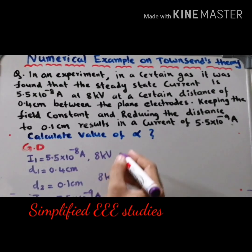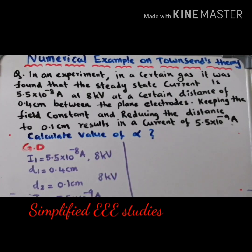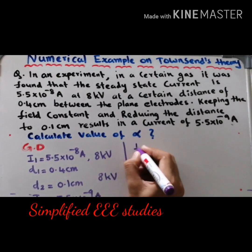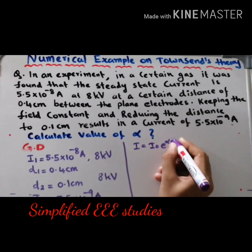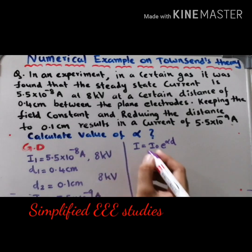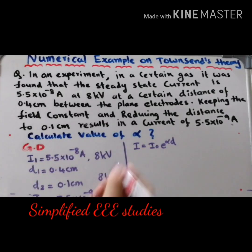Now, how to solve this. You know Townsend's current growth equation by considering primary ionization: I = I₀ · e^(α·d). This is the most important formula in high voltage engineering. So we can write I1 = I₀ · e^(α·D1) as equation 1, and I2 = I₀ · e^(α·D2) as equation 2. Now take the ratio.